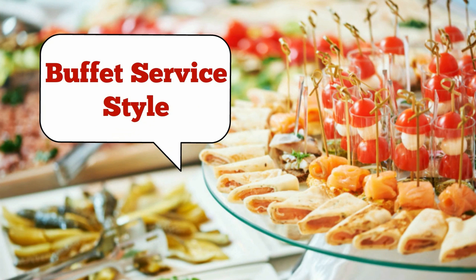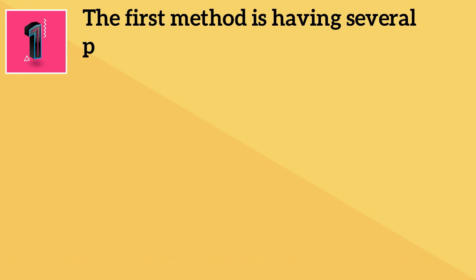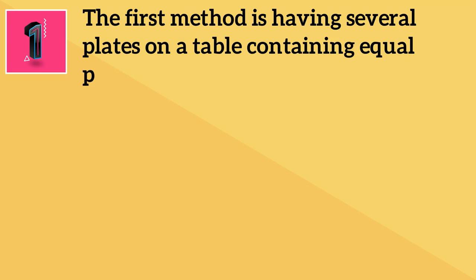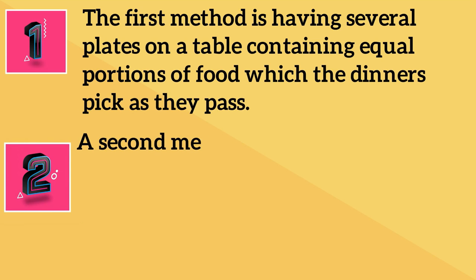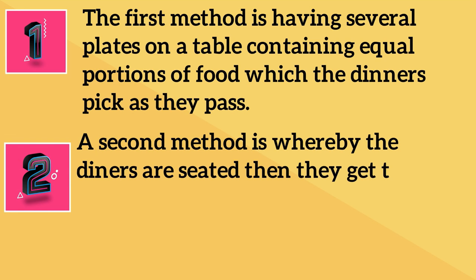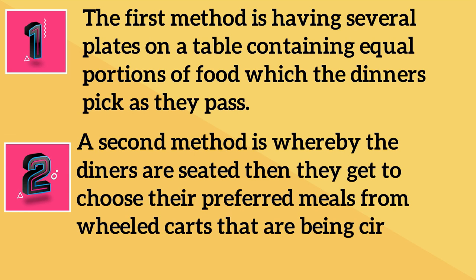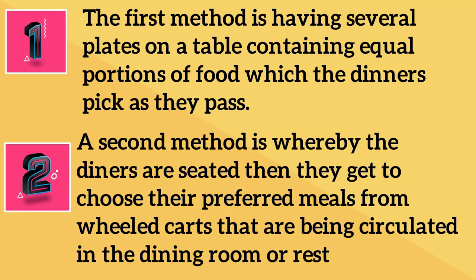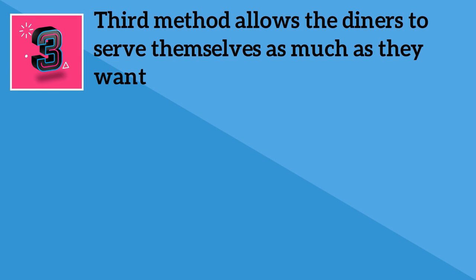Buffet service styles. The first method is having several plates on a table containing equal portions of food which the diners pick as they pass. The second method is whereby the diners are seated and then get to choose their preferred meals from wheeled carts that are being circulated in the dining room or restaurant by servers. The third method allows the diners to serve themselves as much as they want.